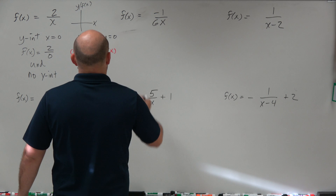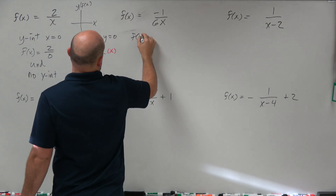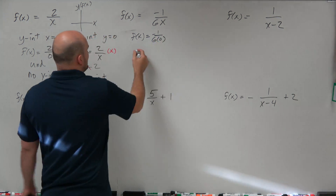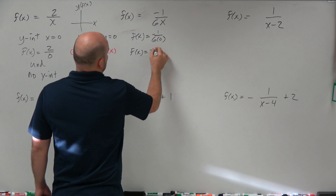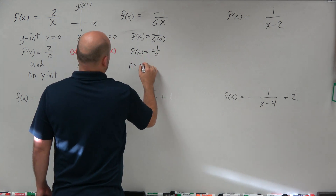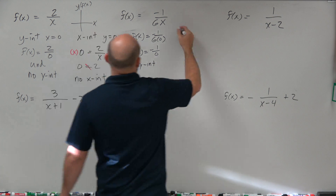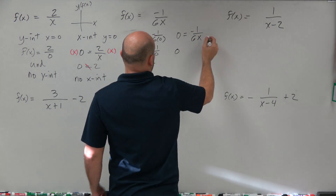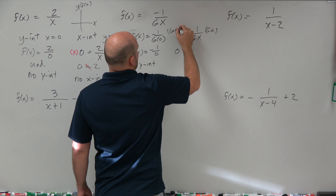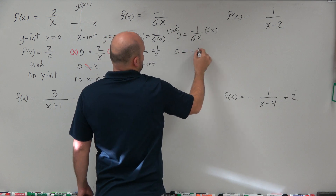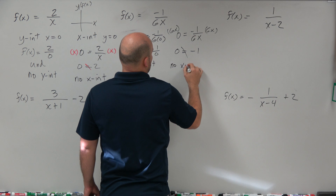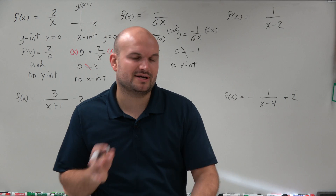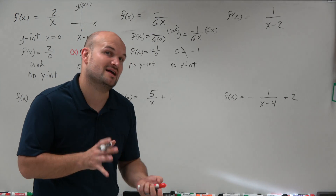We can do the exact same thing for the next problem. Setting x equal to 0, f of x equals negative 1 over 0 — so there's no y-intercept. And then setting y equal to 0: 0 equals negative 1 over 6x. Multiply on both sides and you get 0 equals negative 1, which is undefined — so there's no x-intercept. These are your two basic ones: when there are no transformations, you won't have any x or y-intercepts.